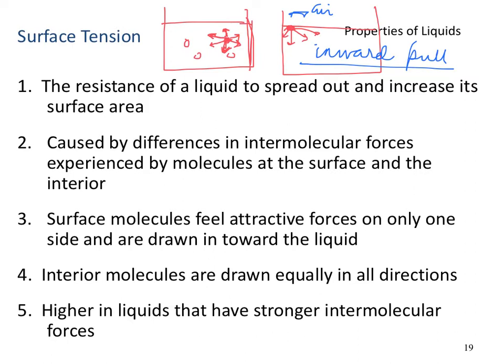At any given point, the surface would want to remain contracted — it wants to minimize its surface area. That's also the reason why raindrops are spherical; they are not cubical, cylindrical, or conical. They are always spherical because a sphere has the minimum surface area of all geometric shapes.